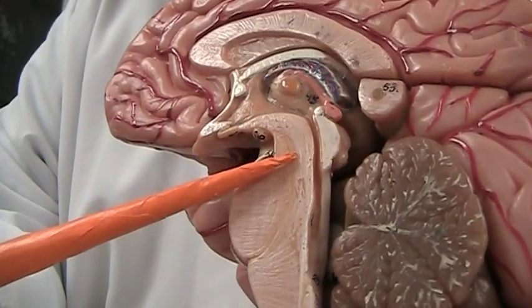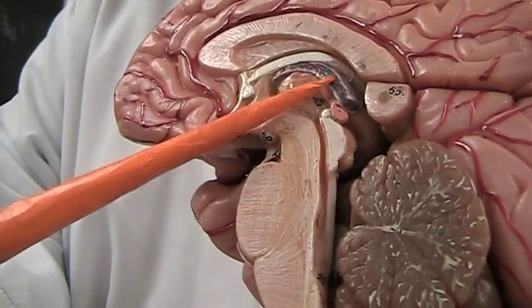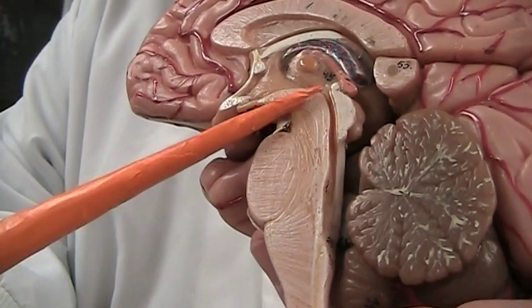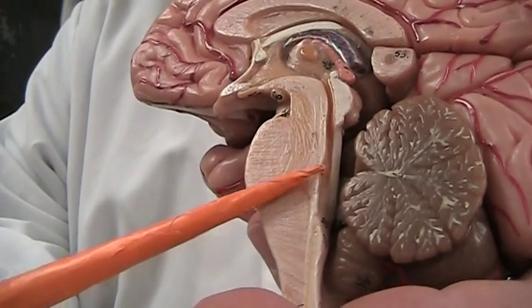And you can see, going down from this region here, the third ventricle, going down the aqueduct of the midbrain to the fourth ventricle.